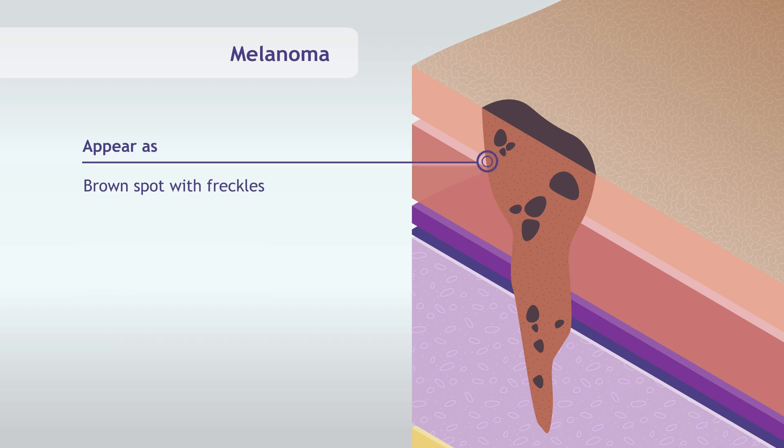It may appear as a brown spot on the skin with freckles, a mole that changes in size or color, or a sore with an irregular border or color.